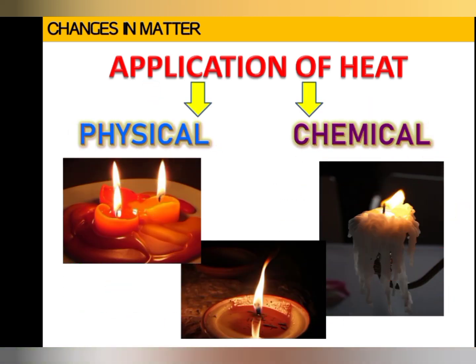A melting candle falls into two types of changes — it could be physical or chemical. In a burning candle, there are both physical and chemical changes. The melting of solid wax to form liquid wax and the evaporation of liquid wax to form wax vapor are physical changes. The burning of wax vapor is a chemical change. So a burning candle involves both physical and chemical changes.